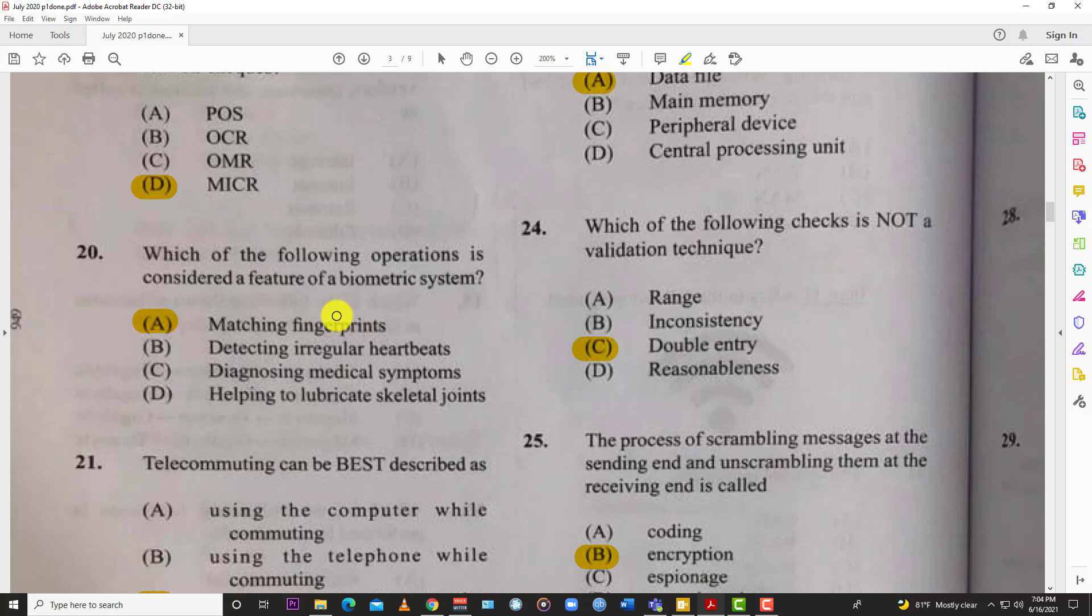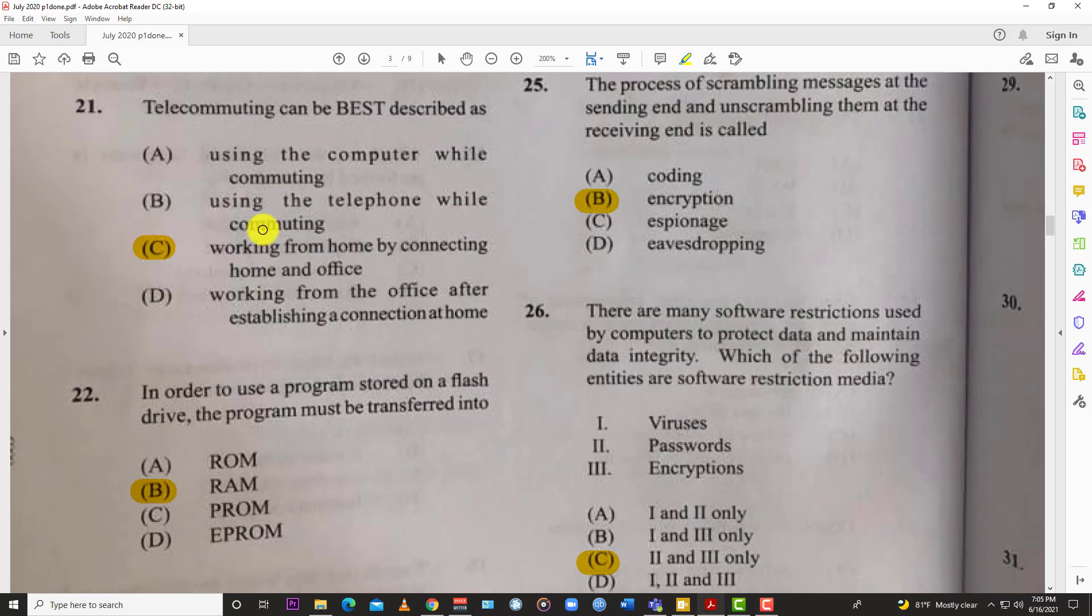Number twenty-one: telecommuting can be best described as C, working from home by connecting home and office. We saw that happening right now - this is 2020, so that was so appropriate. We had COVID and persons had to work from home, so they had to do a lot of telecommuting. That's literally a fancy word for working from home.